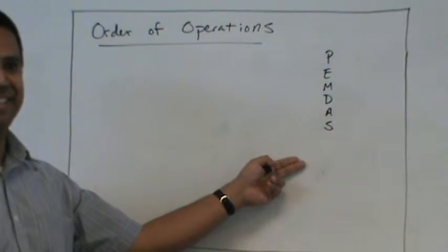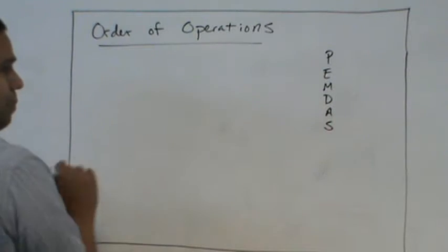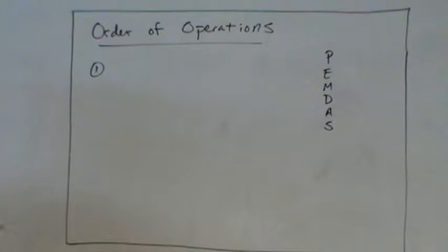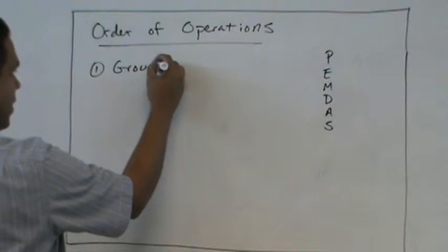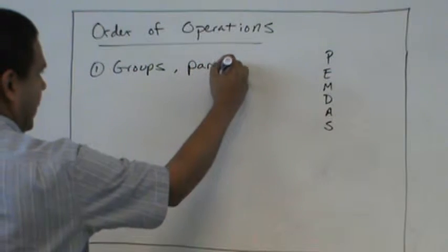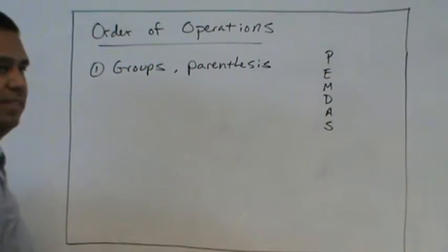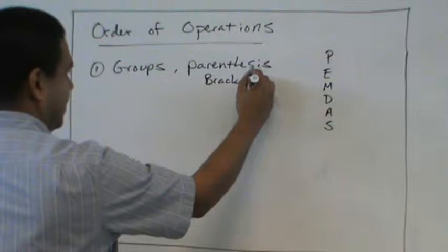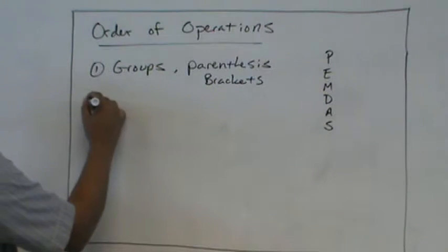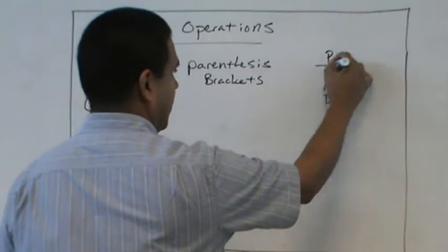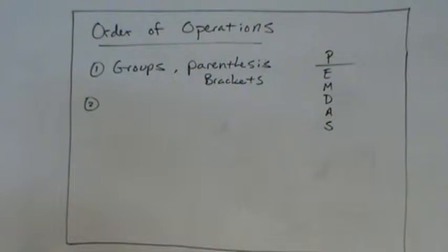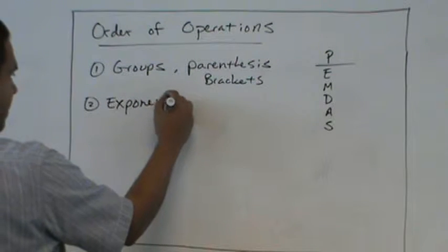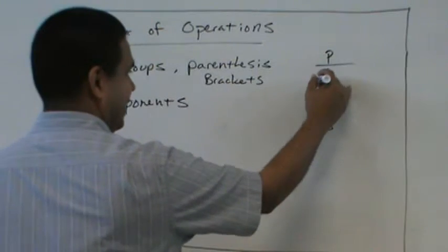PEMDAS. So when we learn order of operations, the first thing that we do is our groups, right? Our groups. And those are inside parentheses, sometimes brackets. And that's what the P stands for. What's next? Exponents. Very good. When we take care of our exponents, that's what the E is for.